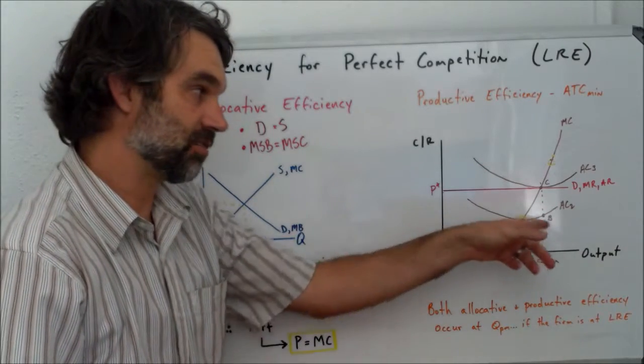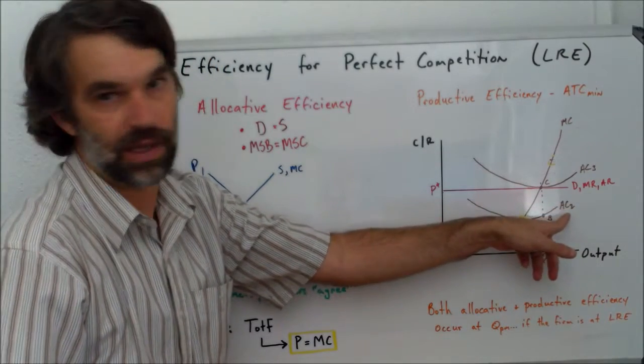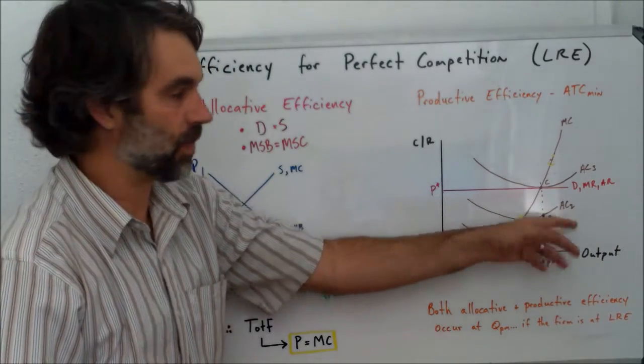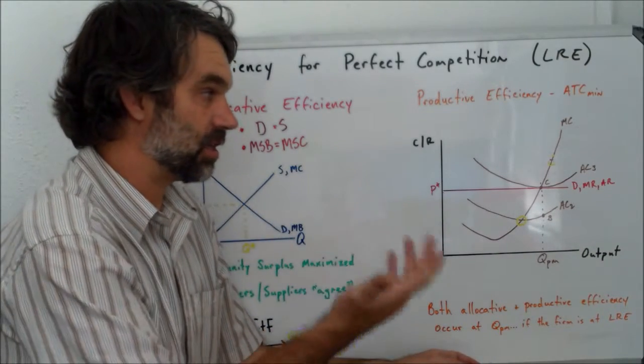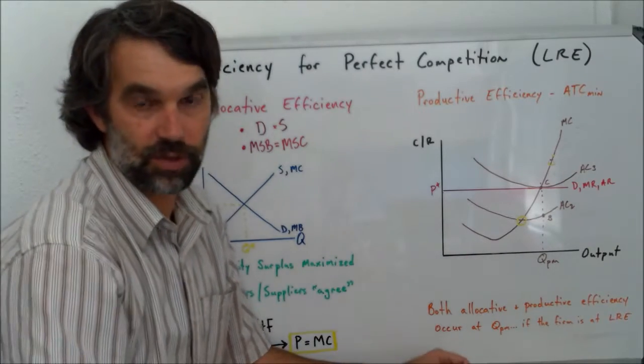So again, this tells us that this firm that we see with AC2 is not at long-run equilibrium. The abnormal profit will attract more suppliers to the industry and their abnormal profits will go away.